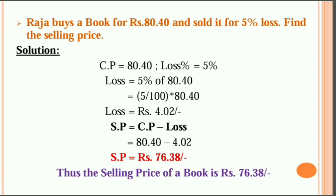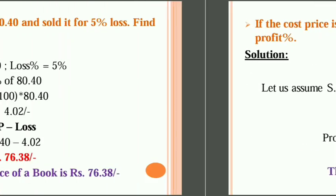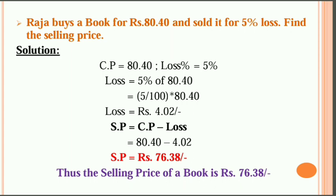Raju buys a book for Rs. 80.40 and sold it for a 5% loss. Find the selling price. Loss is 5% of 80.40, which is 4.02. So SP equals CP minus loss: 80.40 minus 4.02 equals 76.38. Using the formula method: SP equals 1 minus 5 divided by 100, into 80.40, which also gives 76.38.